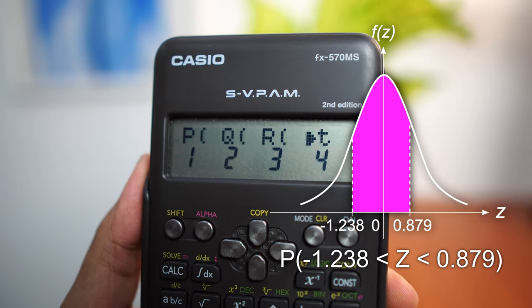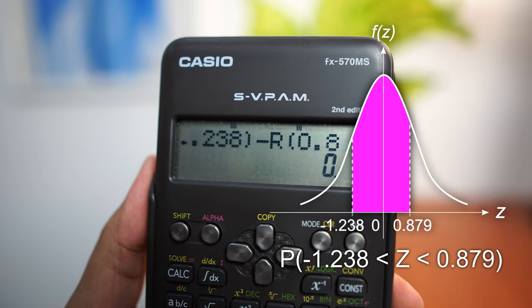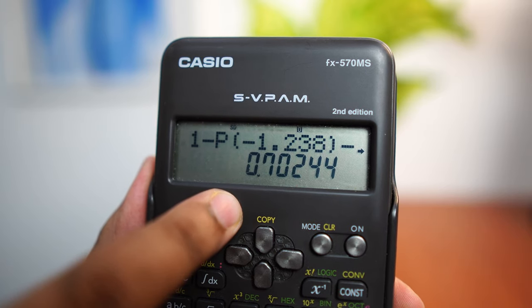shift, 3, 3 for R. Now we key in the Z-score, that is 0.879. This will give us a value of 0.70244.